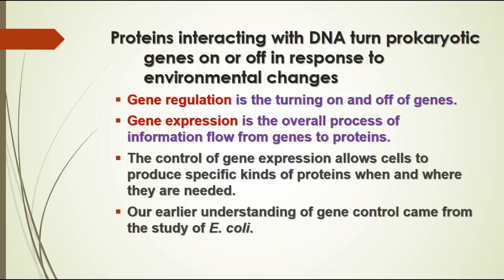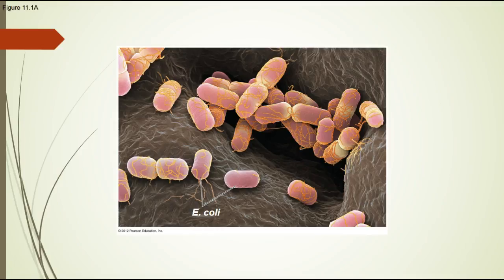This allows cells to produce the kinds of proteins that are needed in certain places at certain times. We first began to understand gene control by studying E. coli, a rod-shaped bacterium that lives in your intestines. It's beneficial because it helps you synthesize certain vitamins, but it also feeds off of what you eat since it lives in your digestive system.